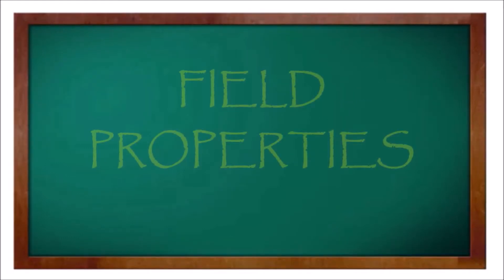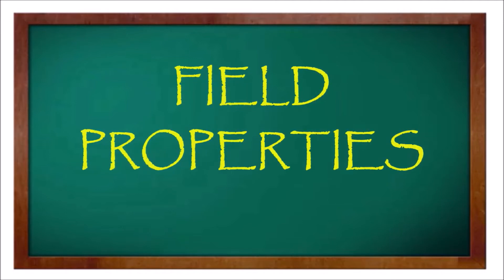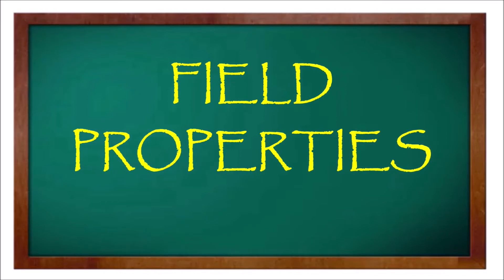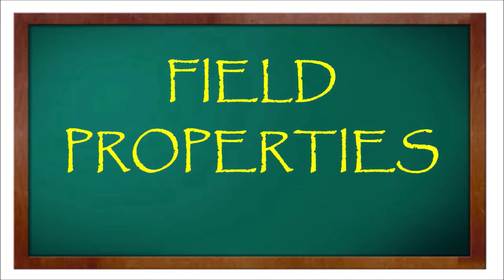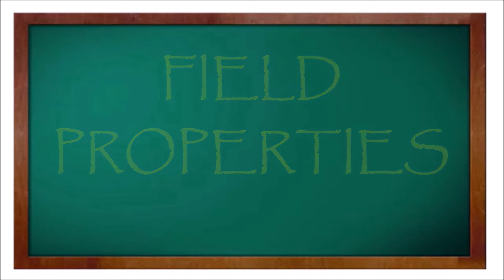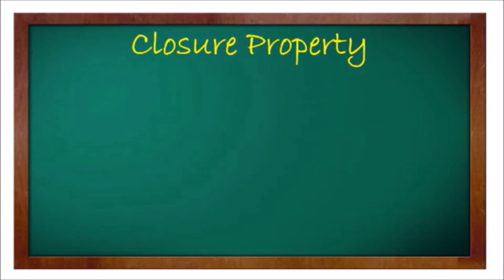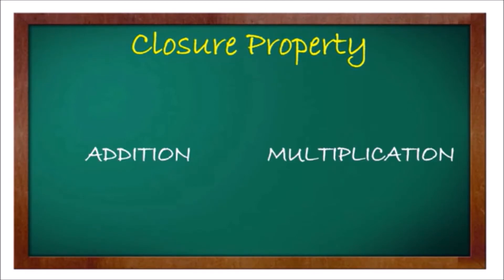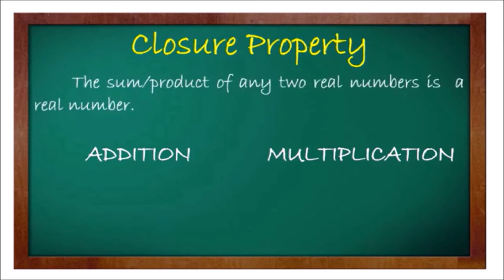The second category of properties of real numbers is the field properties. The field properties are applicable only for addition and multiplication. The first field property is the closure property, which states that the sum or product of any two real numbers is a real number. Take note: sum is the result of addition and product is the result of multiplication.